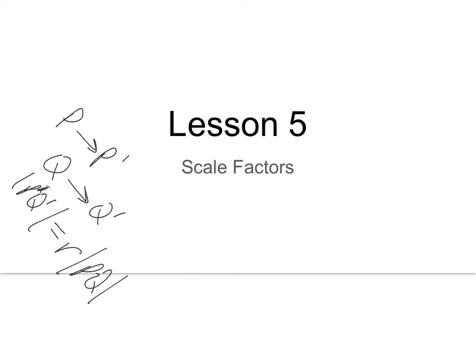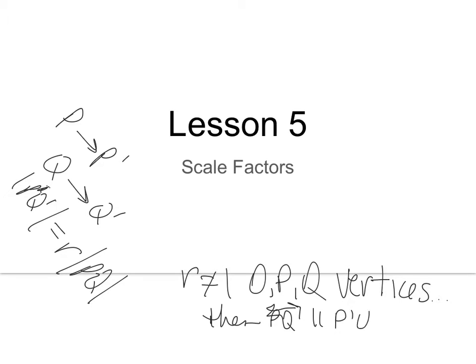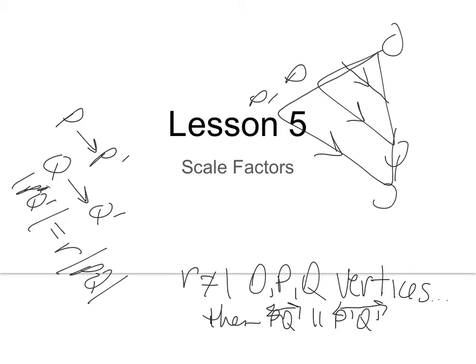Also, if the scale factor is not equal to 1, and O, P, and Q are the vertices of a triangle, then line PQ is going to be parallel to P prime Q prime. If we scale something, dilation, those are parallel, even if it gets bigger.